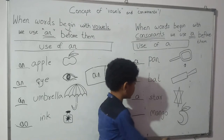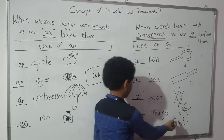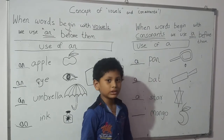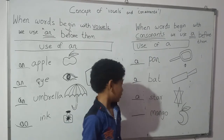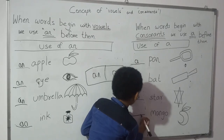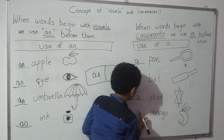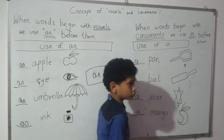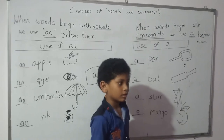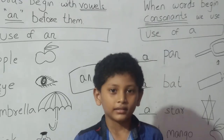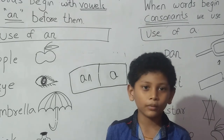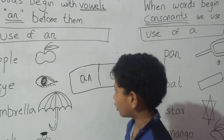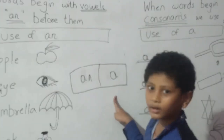This is a MANGO now. M for MANGO. M is a consonant, so we have to write A here. I hope you all understood the concept of AN and A.